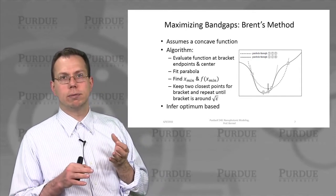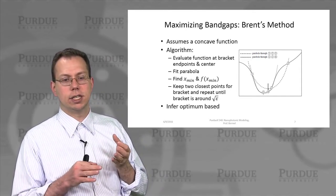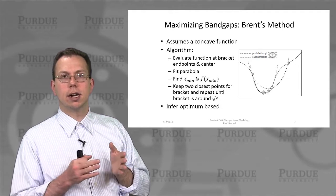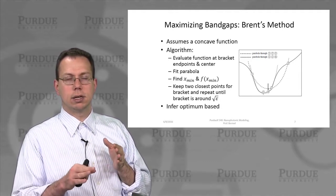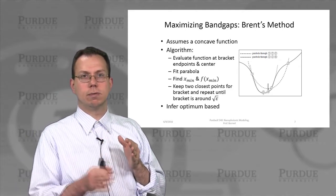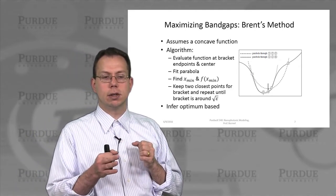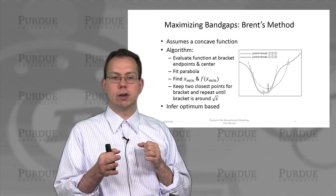So then on the next iteration, you define a tighter bracket, and then you would basically find the new optimum with the new parabola, and then repeat until the bracket is approaching your tolerance. And so this allows you to quickly find the optimum.